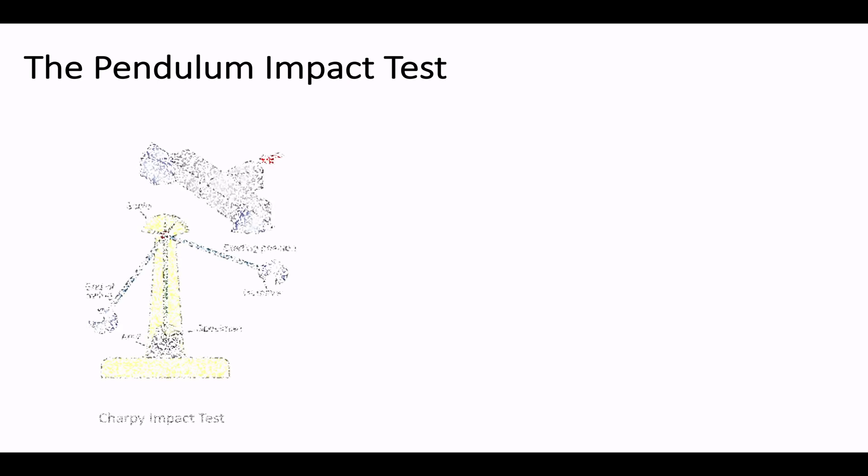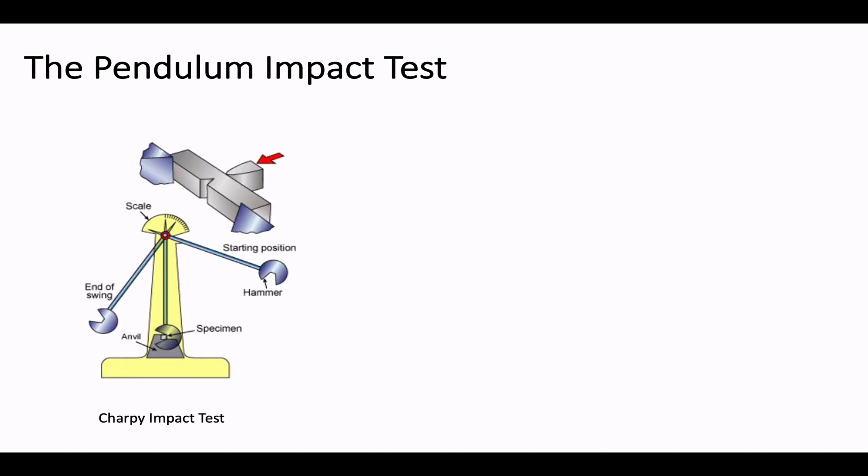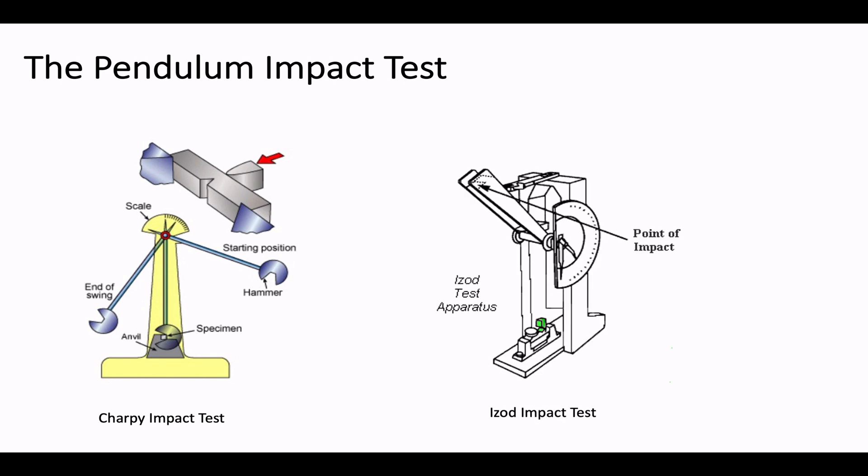Pendulum impact tests are carried out to identify a material's ability to resist impact force. In other words, it will give an idea about the toughness of a material. Toughness, or resistance of a material to tearing, is related to energy absorbed by the part during fracture. The Charpy impact test is one of the popular methods in industry to measure toughness of material. Similarly, we can use the Izod impact test for the same purpose.